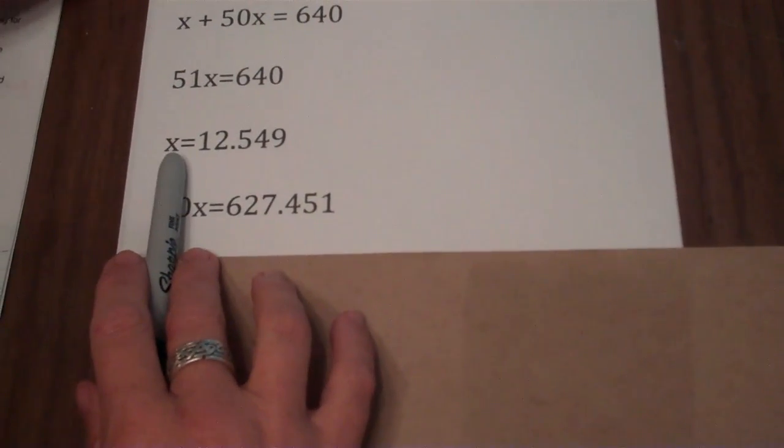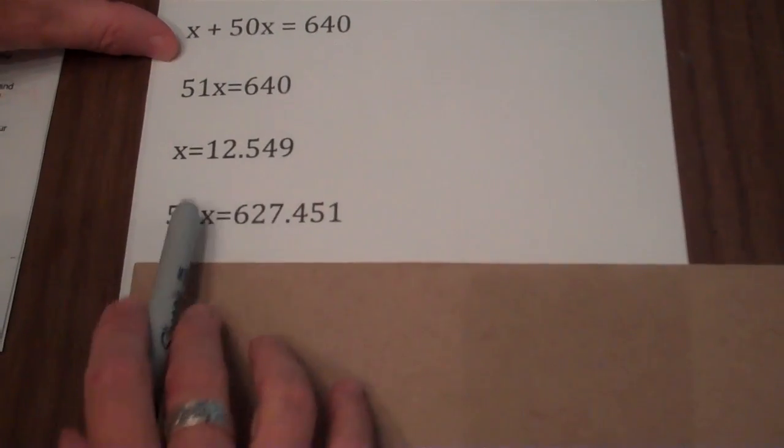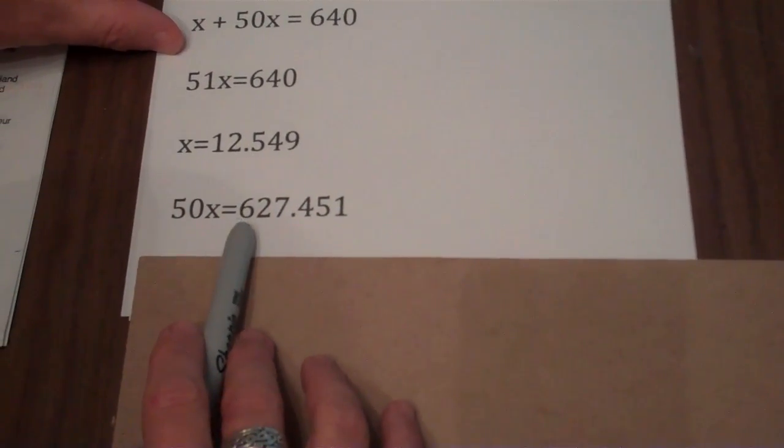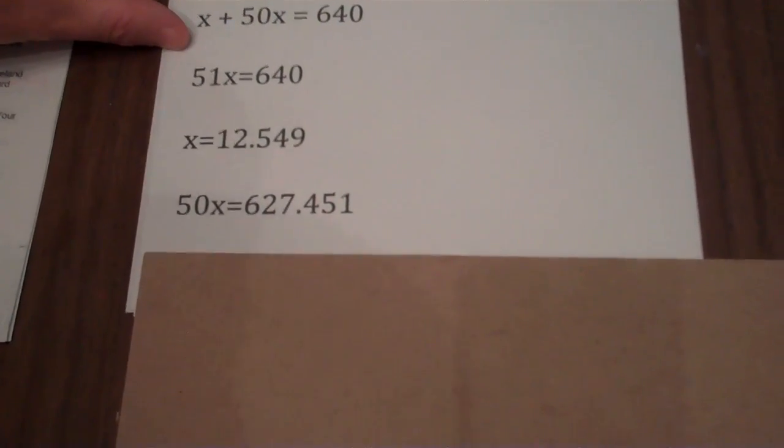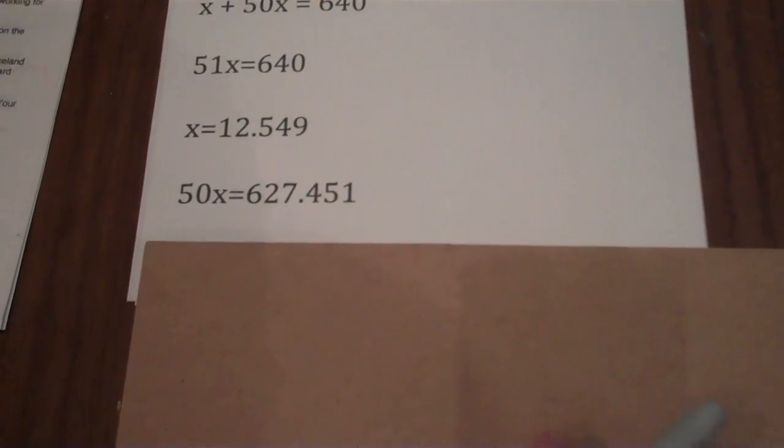If x, the number of fluid ounces of oil, is 12.549, there's 50 times that much, or 50x, or 50 times 12.549, or 627.451 fluid ounces of gasoline.